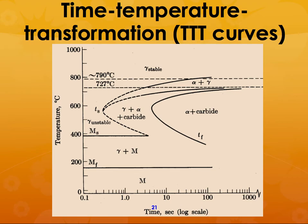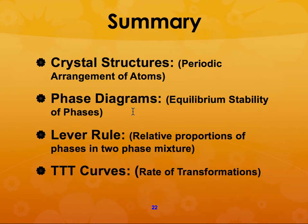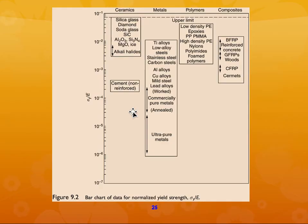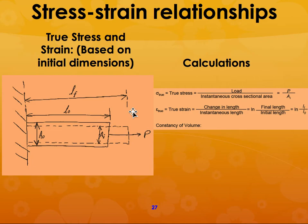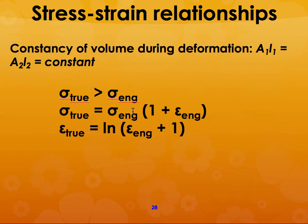Heat treatment is based on what is called the time-temperature transformation (TTT) curve. When you do heat treatment you are talking about kinetics — what is the speed of formation of individual phases, and whether you have enough time for those phases to form. We will learn that through TTT curves, and then we will talk about mechanical properties and what information you can extract from stress-strain curves.